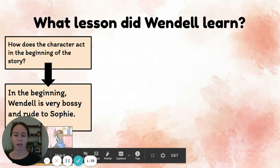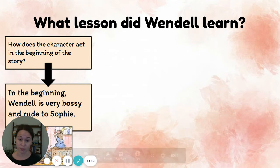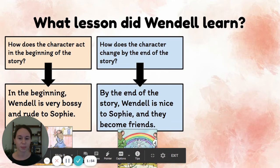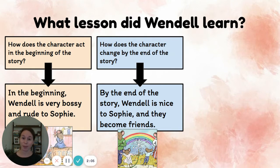Let's think about these questions for A Weekend with Wendell. The first question was: how does the character act in the beginning of the story? In the beginning of the story, Wendell is very bossy and rude to Sophie — that's what he's like in the beginning. The second question was: how does the character change by the end of the story? Well, by the end of the story, Wendell is nice to Sophie and they become friends.